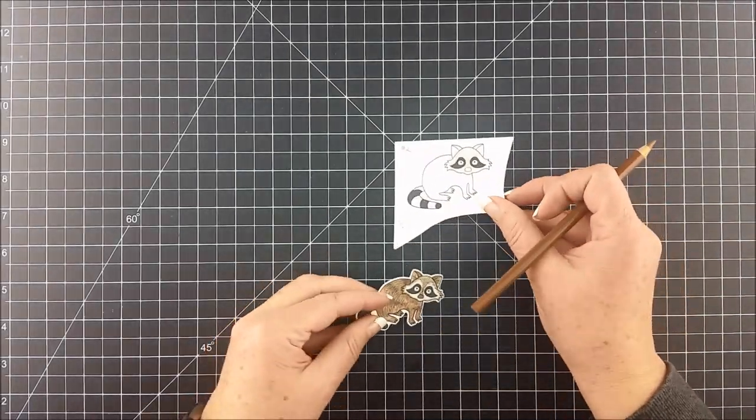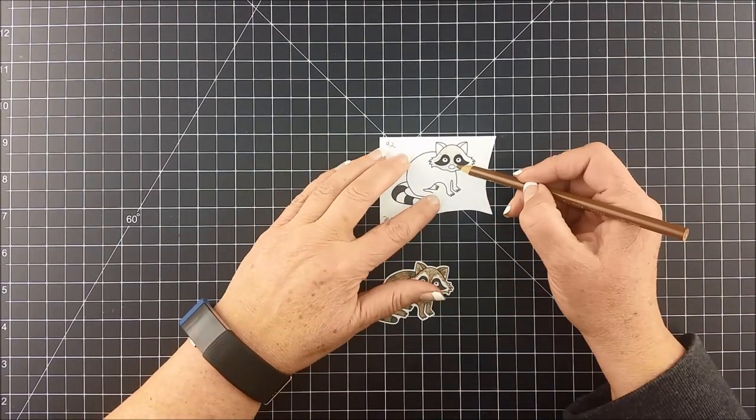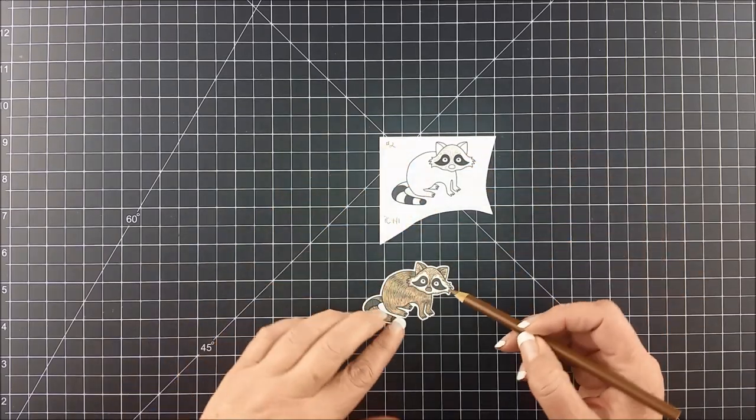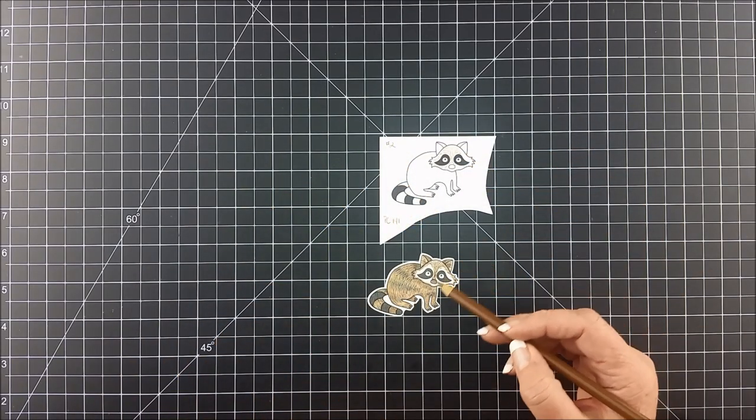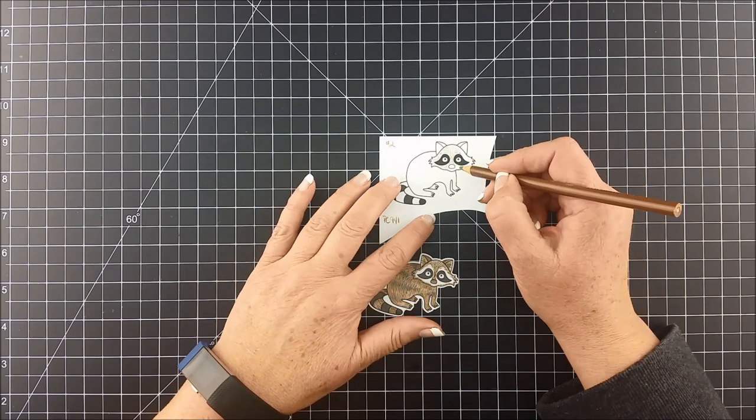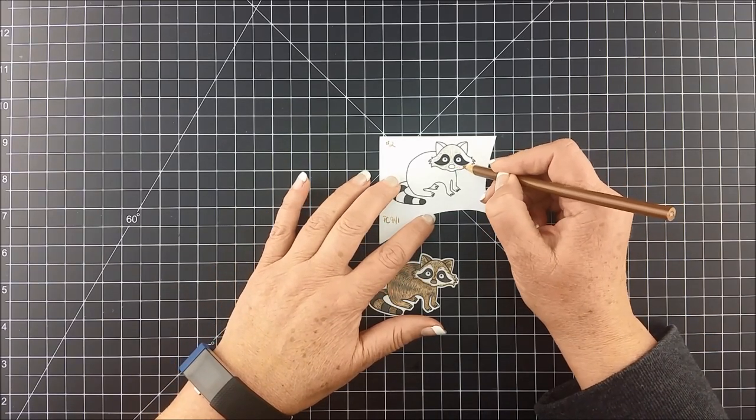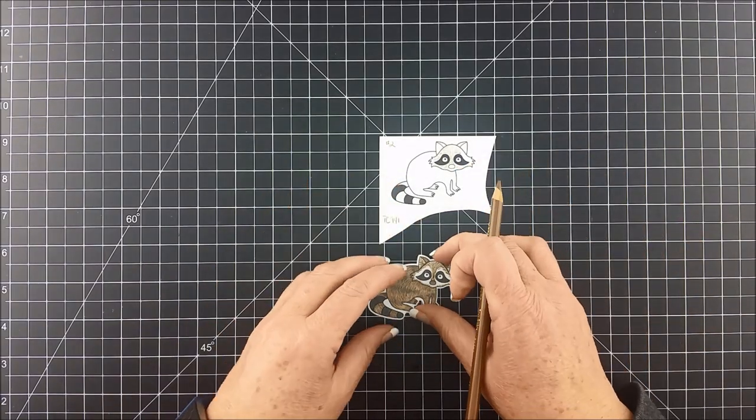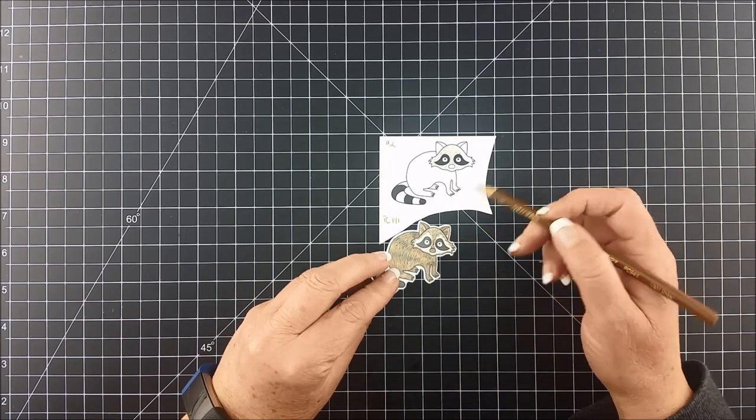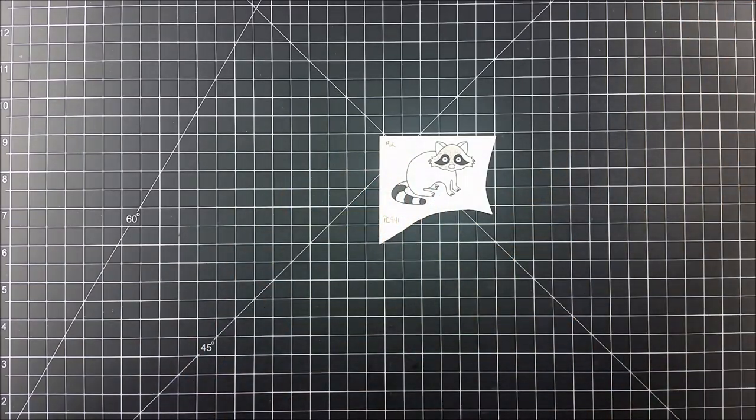Now another decision you're going to want to make early on is whether you're going to color all over his face or leave white around his eyes. I've done them both ways. On this particular one that I'm doing the tutorial on right now, I did the whole thing, so go ahead and make your choice about whether you want white around it or whether you want to leave it completely open.